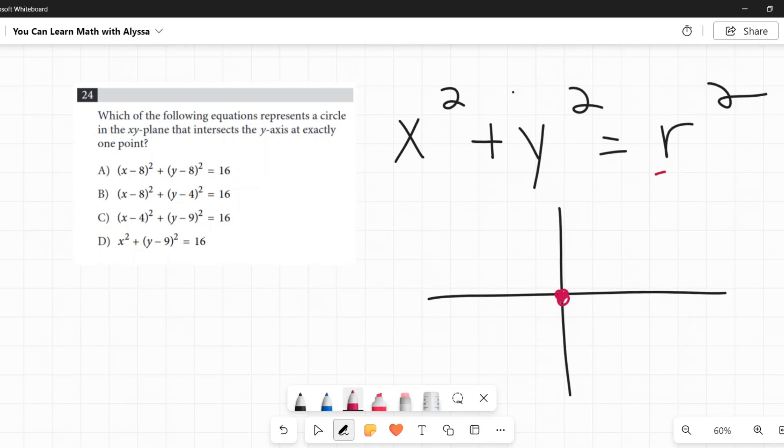So if it was, say, 25, that means its radius is the square root of that, the radius is 5. So 5, 5, 5, 5, drawn poorly, but you get the idea. That would be x squared plus y squared equals 25.